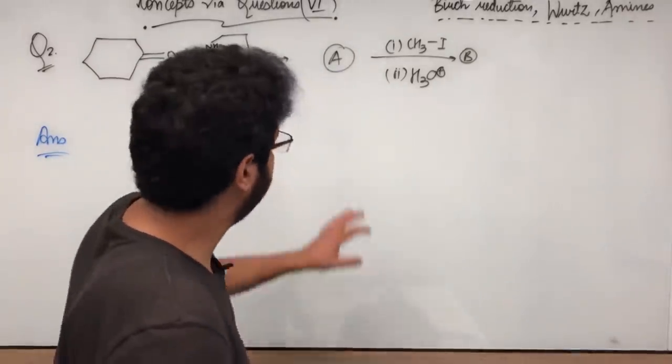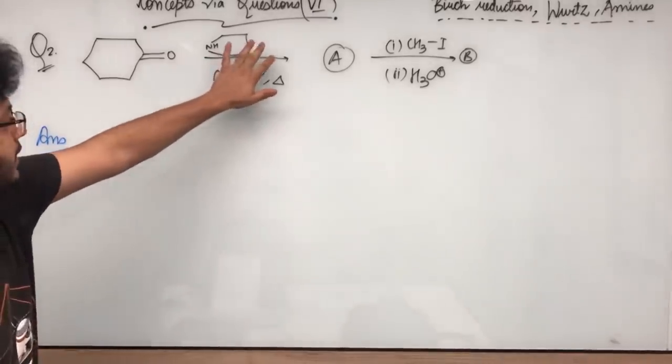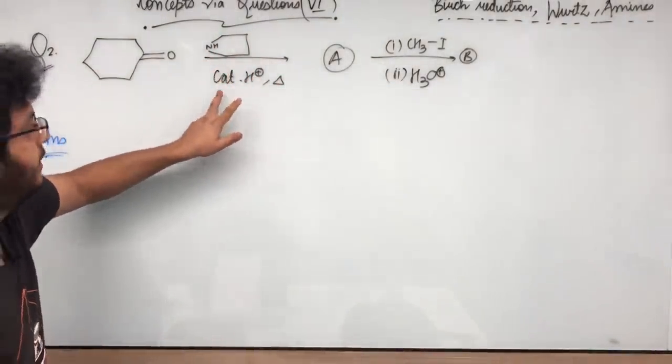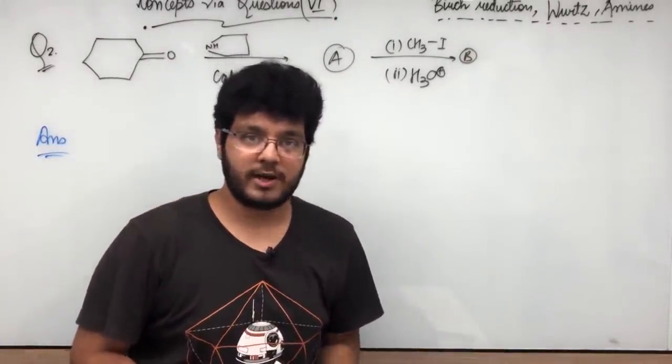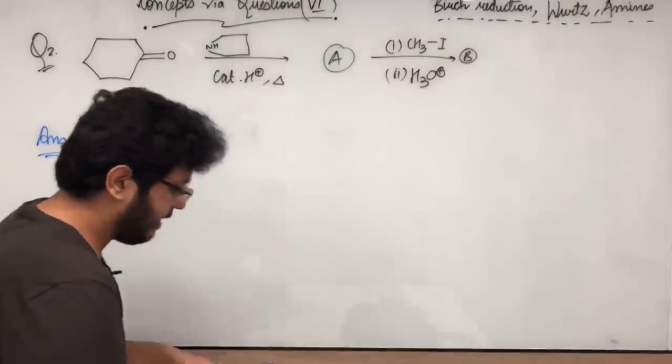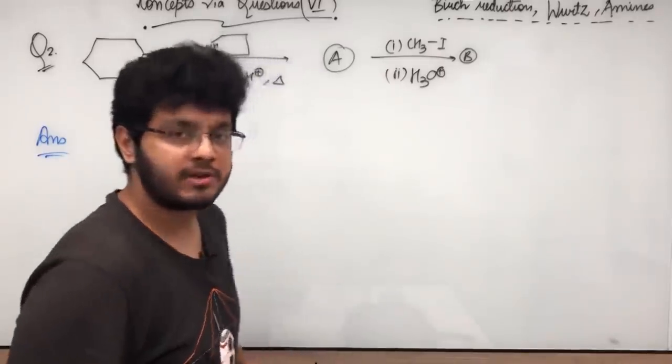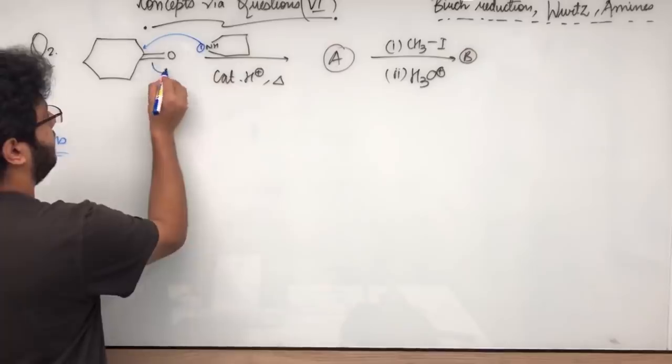Let's move on to the question number 2. Question number 2, chapter Amines. Basically there is cyclohexanone. You have been given this compound containing an amine, secondary amine basically, catalytic H plus to give me some A and then further. So let us try to think, so the first reaction, what will happen?